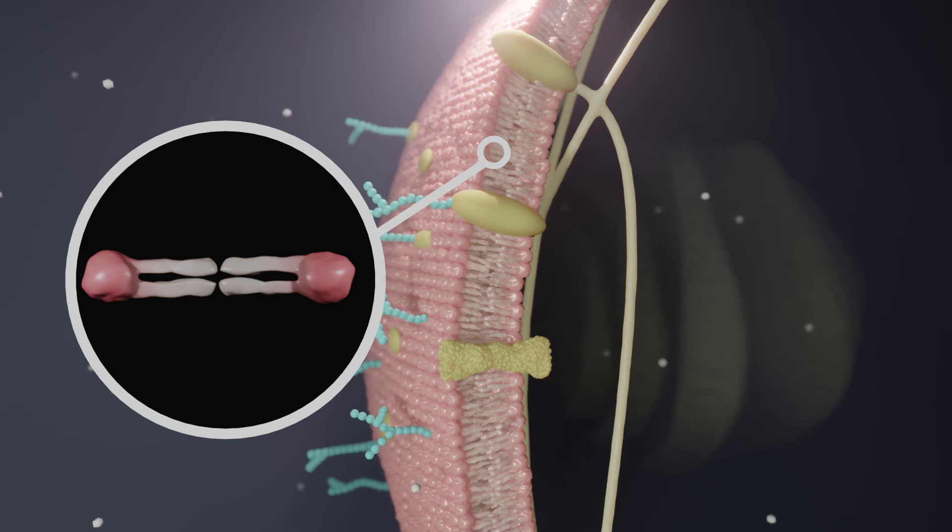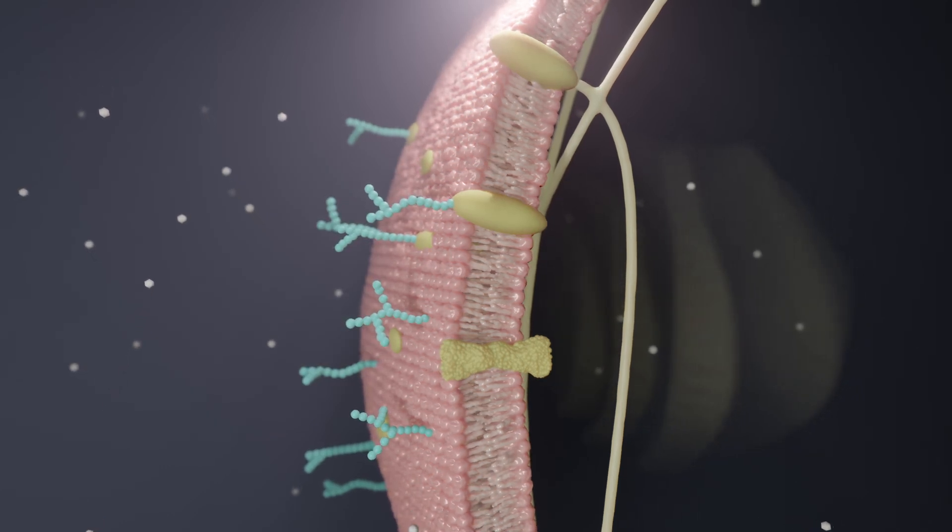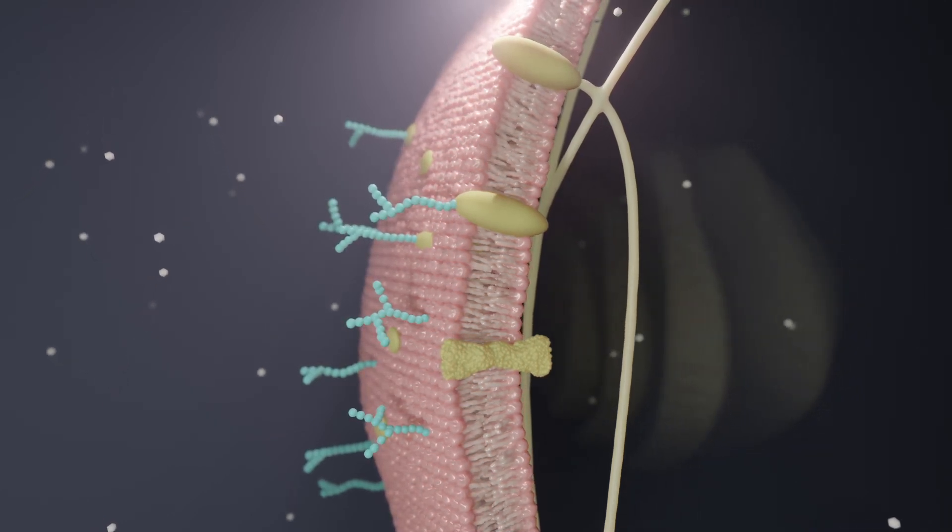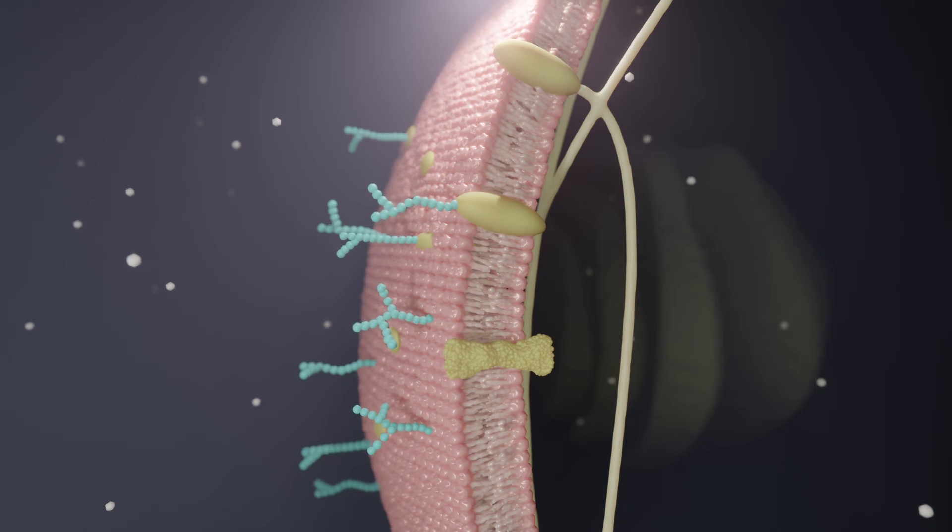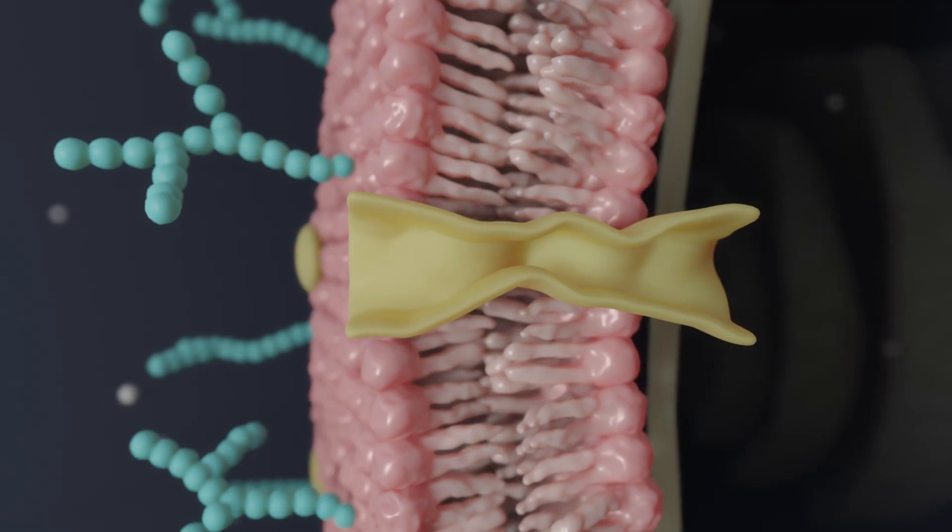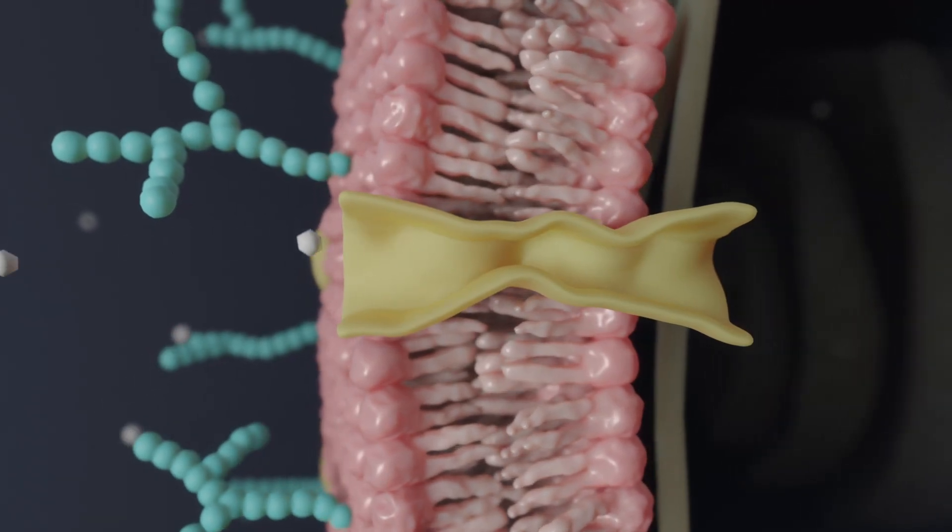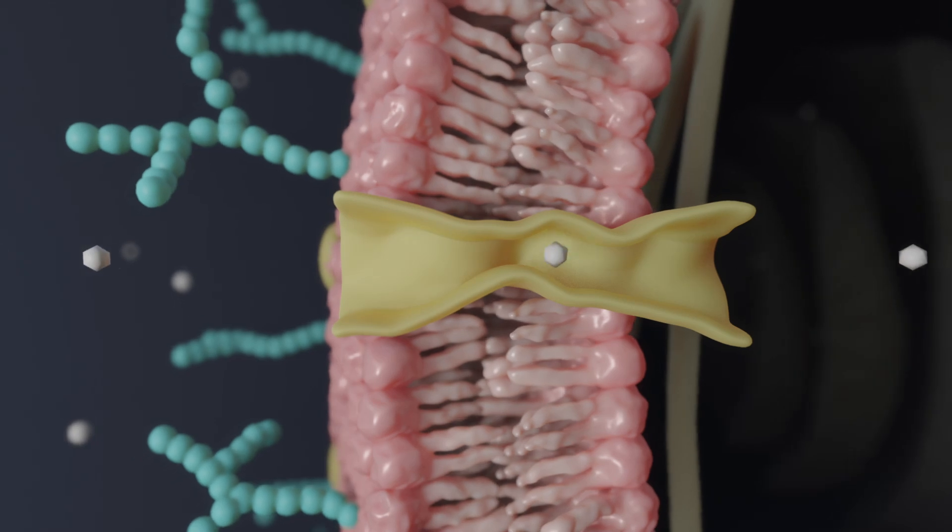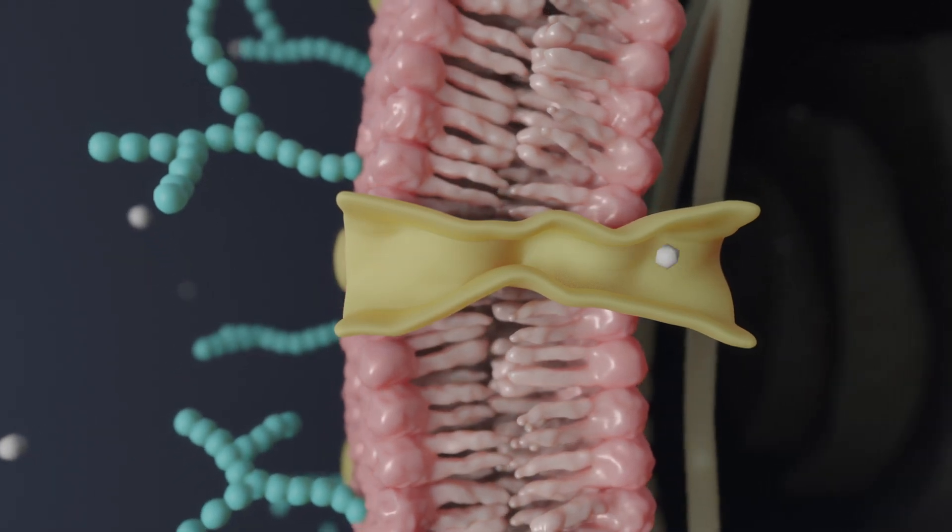Proteins are embedded in and connected to the plasma membrane. Those that completely span the membrane are called transmembrane proteins. This group includes, for example, ion channels, which allow charged particles to pass through the membrane with ease.